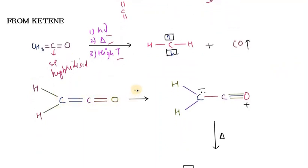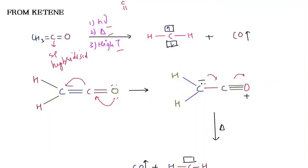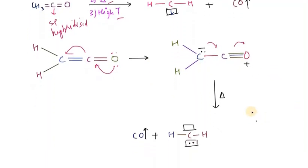Ketene exists in resonance with a resonating structure — oxygen has a positive charge and carbon has a negative charge in one canonical form. When the solution is heated in the presence of light at high temperature, the bond breaks. Whenever a carbon has three bonds with negative charge and one bond breaks, six electrons remain — that is how carbene is formed from ketene.